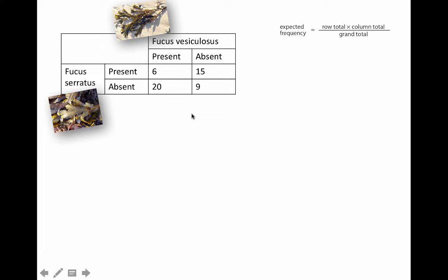Now, how do we calculate the expected frequencies? Well, here's a simple formula: you take the row total and then multiply it by the column total and divide it by the grand total. So let me show you how we're going to do that really quickly. The row total here is 21, right? 15 plus 6. Row total here is 29. Let's get the column totals: 20 plus 6 is 26, and then we have 24. What's the grand total? It's going to be 50.